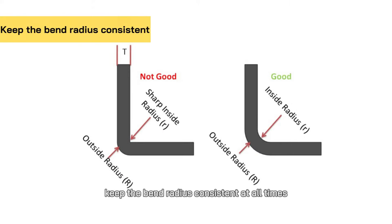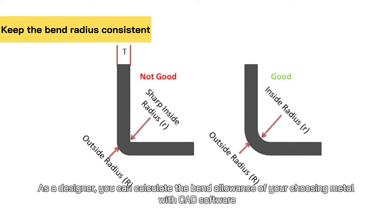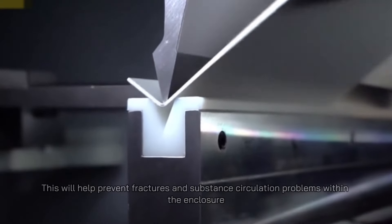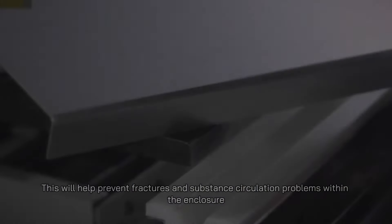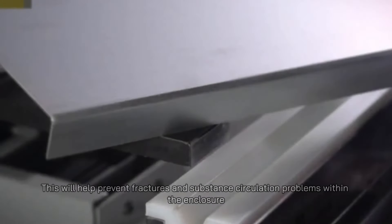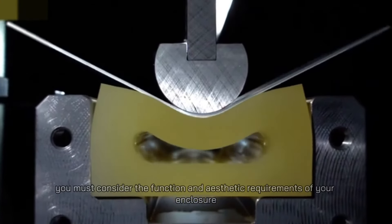Second, keep the bend radius consistent at all times. The bend radius you have chosen in your design must correspond with the enclosure's width. As a designer, you can calculate the bend allowance of your chosen metal with CAD software. This will help prevent fractures and substance circulation problems within the enclosure. When choosing your bend radii, you must consider the function and aesthetic requirements of your enclosure.